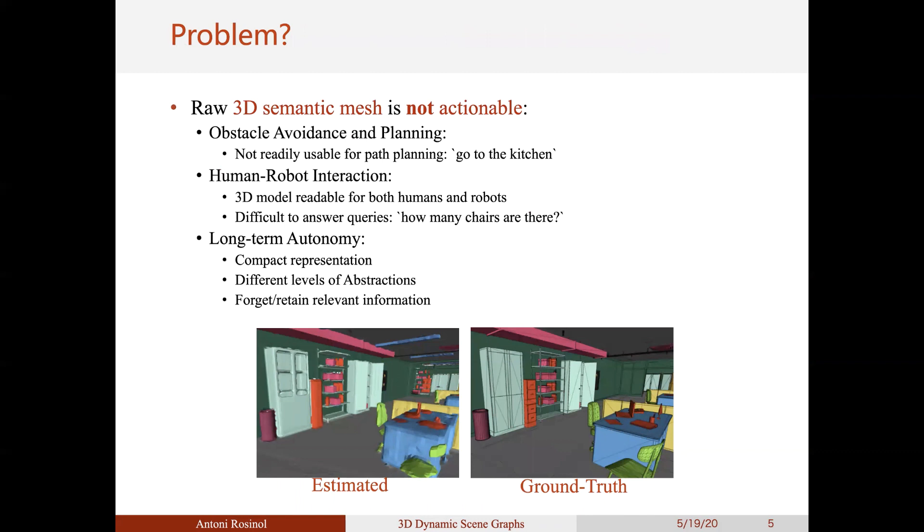So, although the 3D metric semantic reconstruction is featureful, it still remains difficult to make it actionable. In particular, we would like to be able to perform semantically informed path planning queries, such as going to the kitchen, which not only requires to know where the kitchen is, but also, if the scene is very large, it requires an abstraction such as a topological map to be able to plan efficiently a collision-free path to that room.